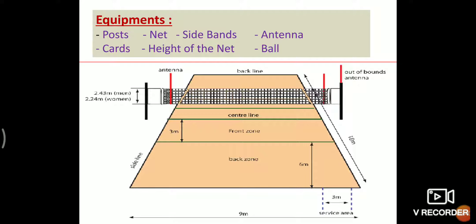Side band: Two wide bands are fastened vertically to the net and placed directly above each sideline. They are 5 centimeters wide and 1 meter long and are considered a part of the net.